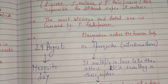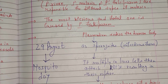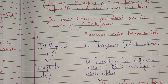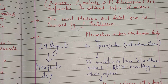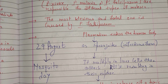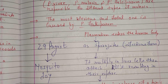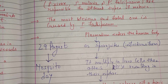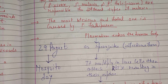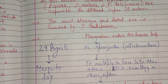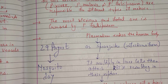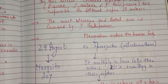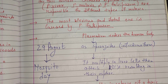Female mosquitoes bite humans because they need blood to nurture their eggs, whereas male mosquitoes generally do not bite humans — they feed on vegetables and leaves. So it is the female mosquitoes that bite and transmit Plasmodium into the human body.